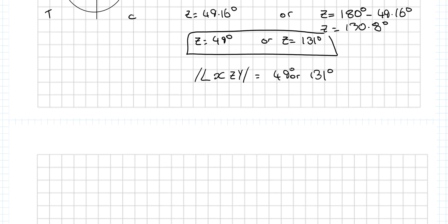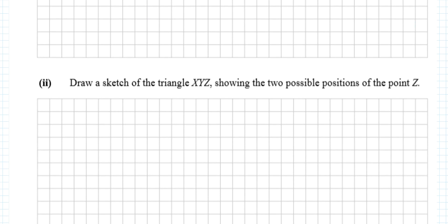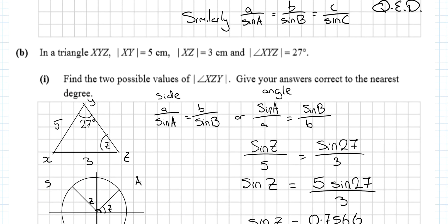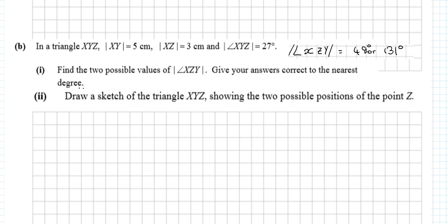The last part asks you to sketch the two possible positions of point Z. Going back to the start of the question: XY = 5, XZ = 3, angle XYZ = 27°.